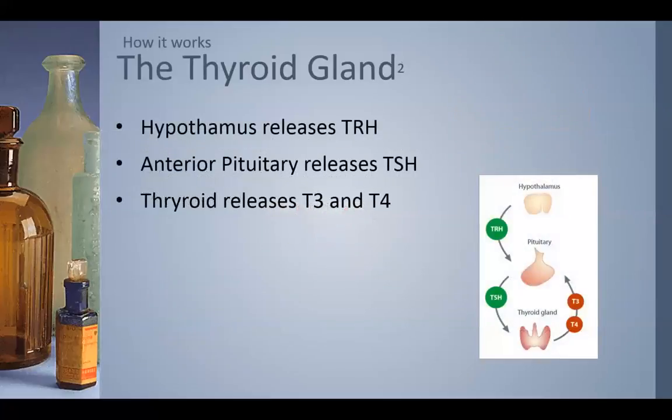The hypothalamus releases thyroid-releasing hormone, which stimulates the anterior pituitary to release thyroid-stimulating hormone. That then stimulates the thyroid to release the two hormones, T3 and T4.